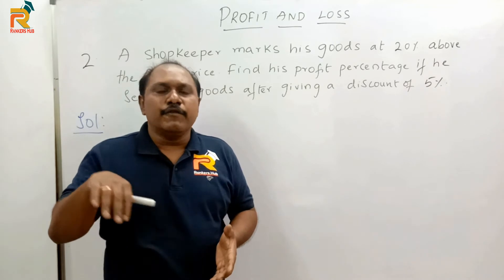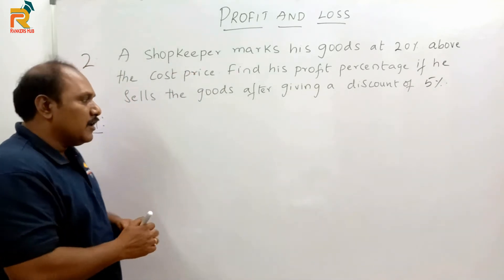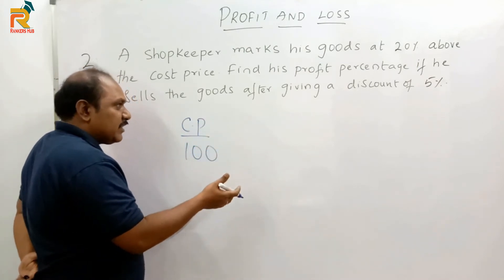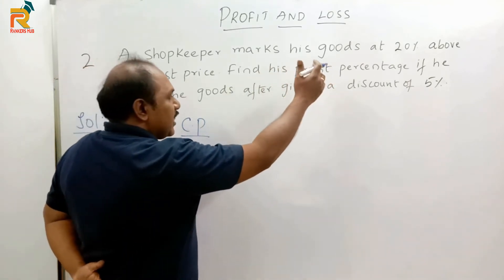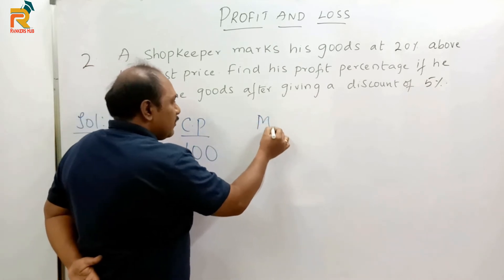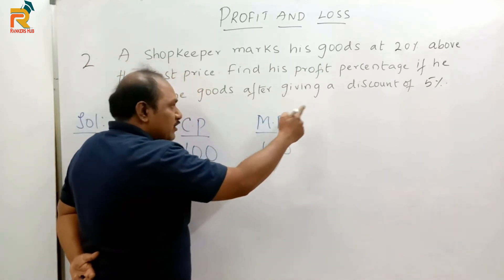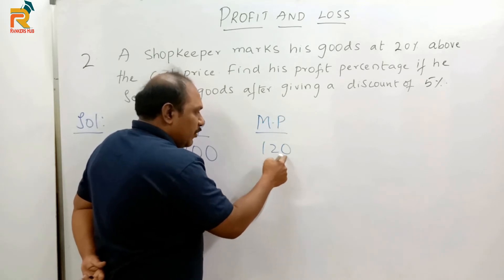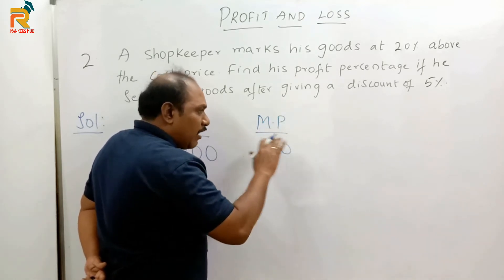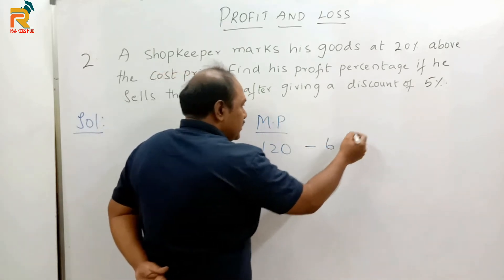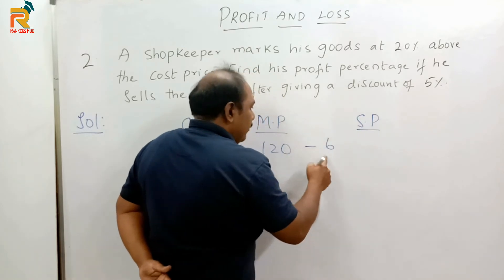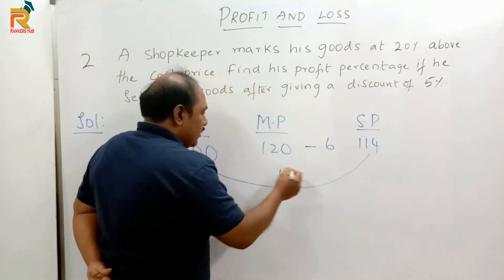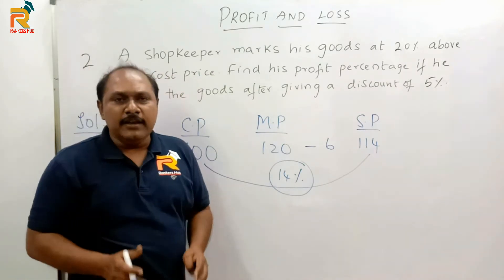So the cost price of the article is 100 and the selling price is 114. The profit earned is 14% — that is 114 minus 100. To summarize: assume the cost price is 100, marked price is 120 (20% above cost price), 10% of 120 is 12, so 5% is 6, discount is 6, selling price is 120 minus 6 which is 114. The shopkeeper earns a profit of 14%.